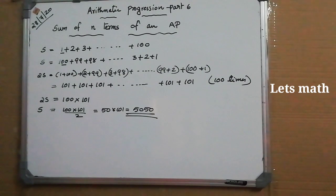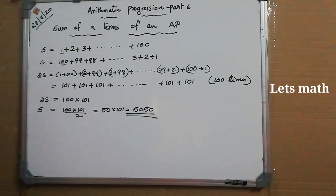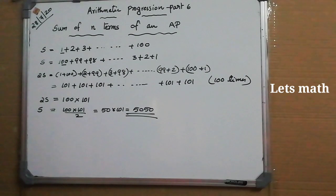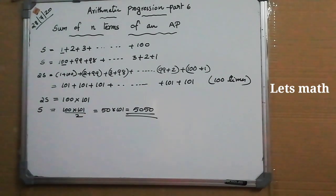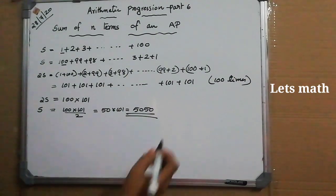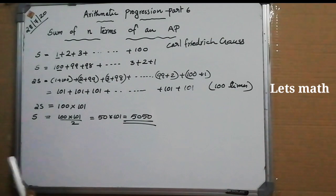This was a task given to a boy who was 10 years old in the 19th century. His teacher asked him to find the sum of integers from 1 to 100 — the purpose being to keep the class silent. But within seconds, that boy answered 5050. When the teacher asked how, he explained his method. That boy later became one of the most famous mathematicians. His name was Frederick Gauss, who lived in the 19th century.